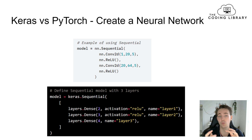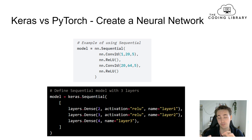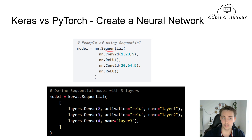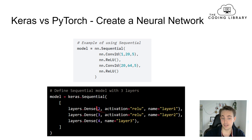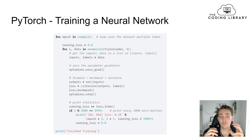Now we're going to compare the frameworks code-wise — how we set up a sequential model and how we train a model in both Keras and PyTorch. When creating a neural network or sequential model, the two are very similar. In PyTorch, we import the nn module and use the sequential model to specify layers and neurons. In Keras, we similarly specify the layers and neurons in the sequential model. The two are very close when it comes to defining the architecture of a neural network.